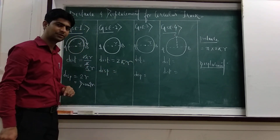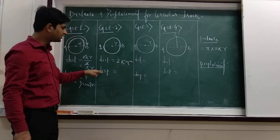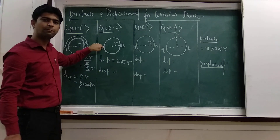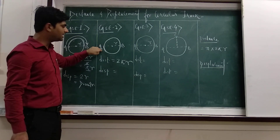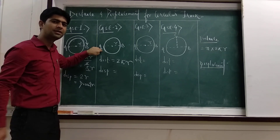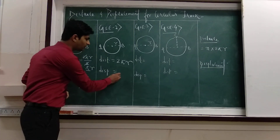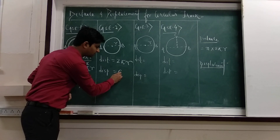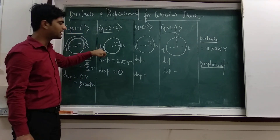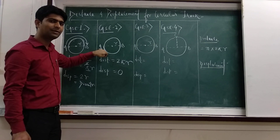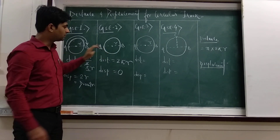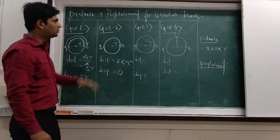The distance — the perimeter of the circle — is 2πr. Whereas for displacement: in this case we started from point A and ended at point A, meaning the initial and final points are the same. So if the initial and final points are the same, the displacement will be 0.